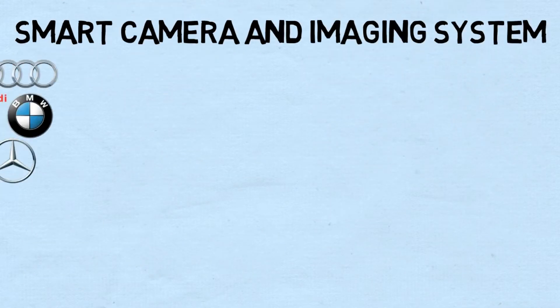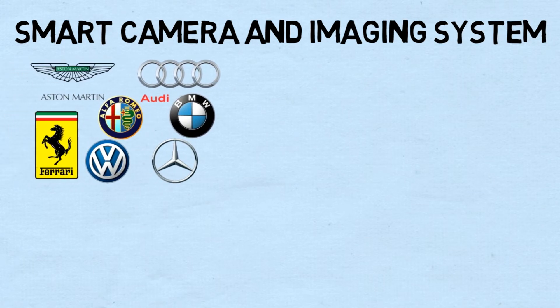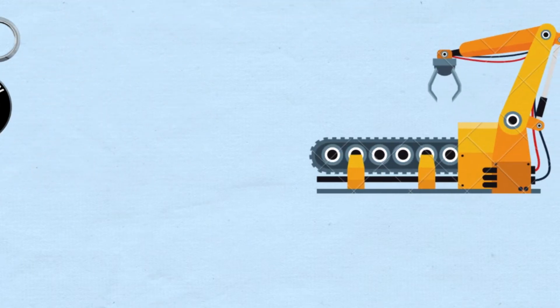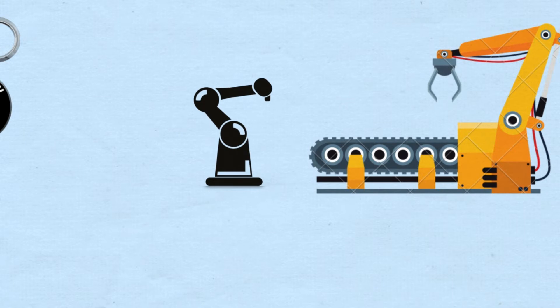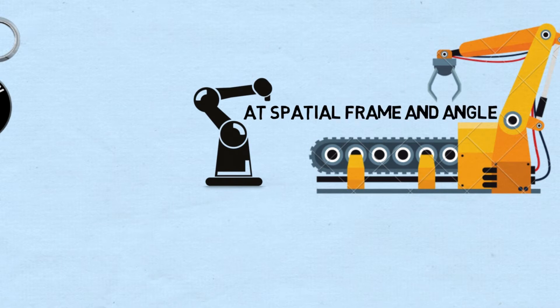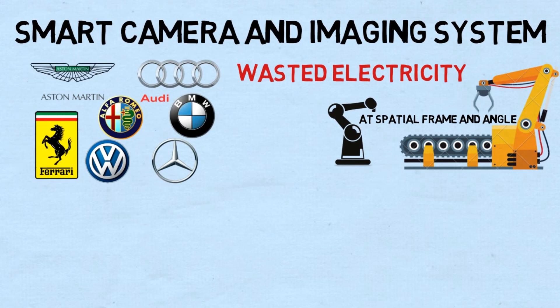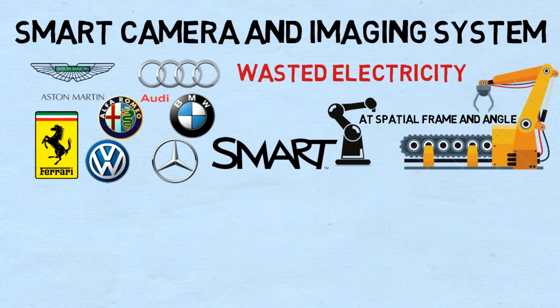IIoT contains smart camera and imaging systems. In big multinational automobile manufacturing companies, robotic arms are used for automation, which detects objects to pick and assemble only at specific spatial frames and angles. But even if there is no work, robotic arms continue to move, wasting electricity. Now, with smart automation, robots can easily identify objects in 3D space.